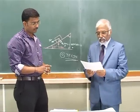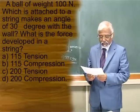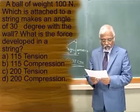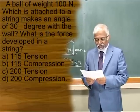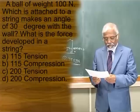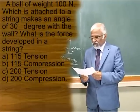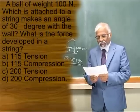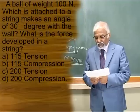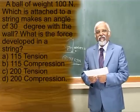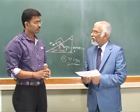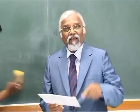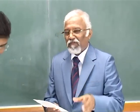A ball of weight 100 Newtons, which is attached to a string, makes an angle of 30 degrees with the wall. What is the force developed in the string? Option A: 115 tension, Option B: 115 compression, Option C: 200 tension, Option D: 200 compression. Please pause the video and start working on your own.